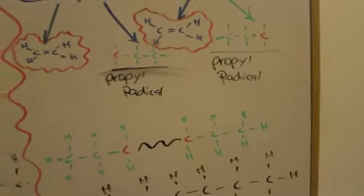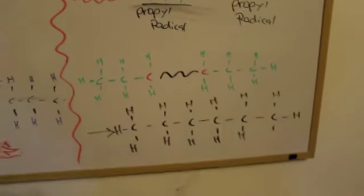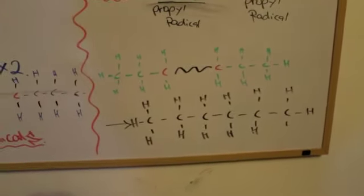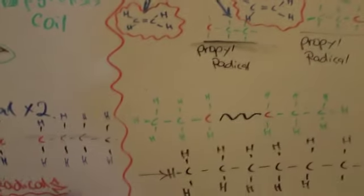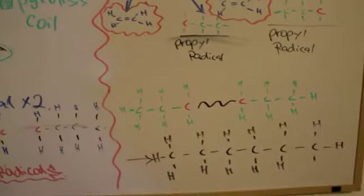After a while, the propyl radical one and propyl radical two will combine, as you can see over there. Once they combine, they will form hexane, which isn't reactive. Keep in mind that the only reason the propyl radicals will react is because of the radical - both need one more electron, so they connect and share.